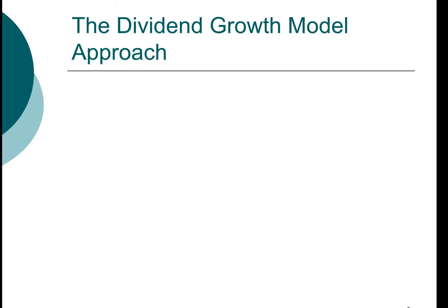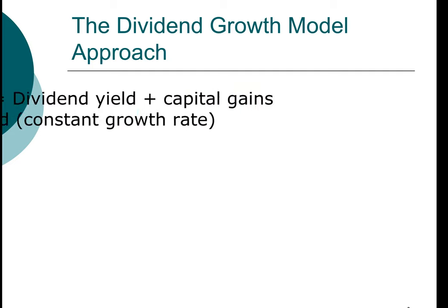Let's take a look at the dividend growth model. The required return according to the dividend growth model has two components. The first is the dividend yield component, and the second is the capital gains yield component. In the constant growth model, the capital gains yield is the same as the constant growth rate because the only source of growth in the dividend growth model is by dividend growth. The subscript E here is notation for equity.